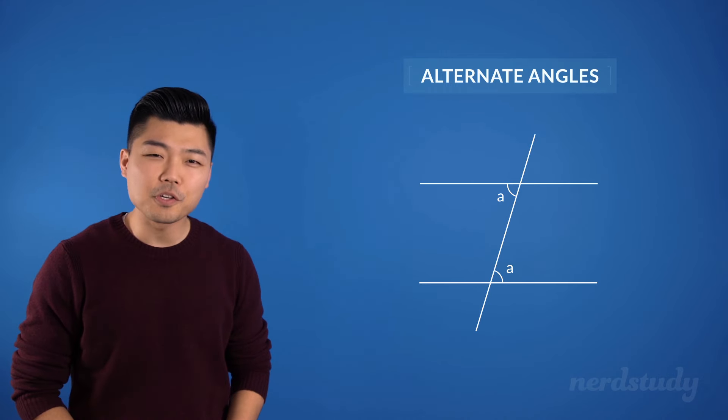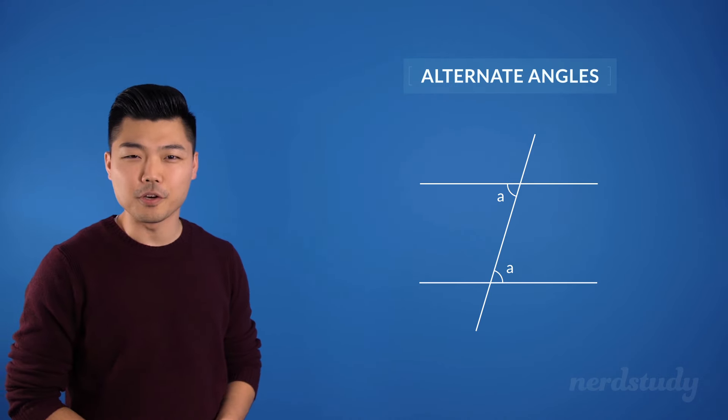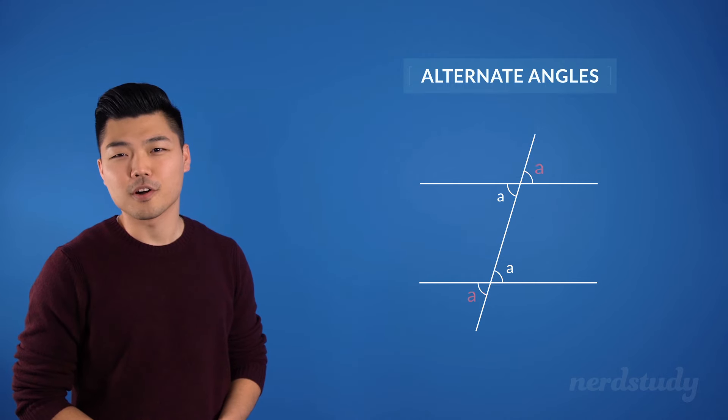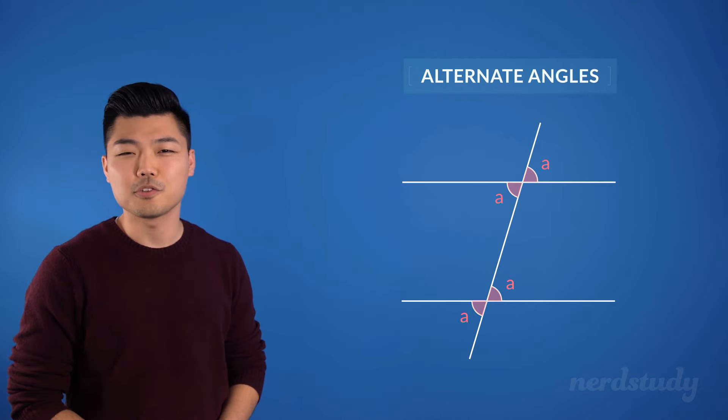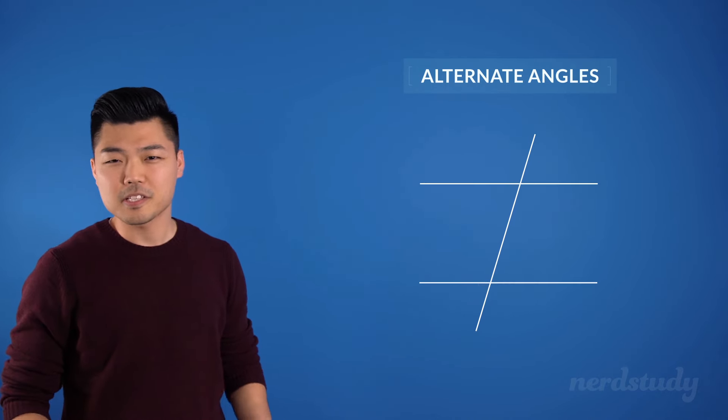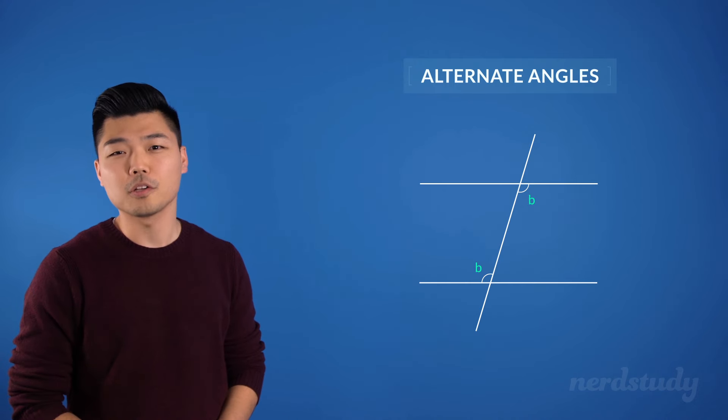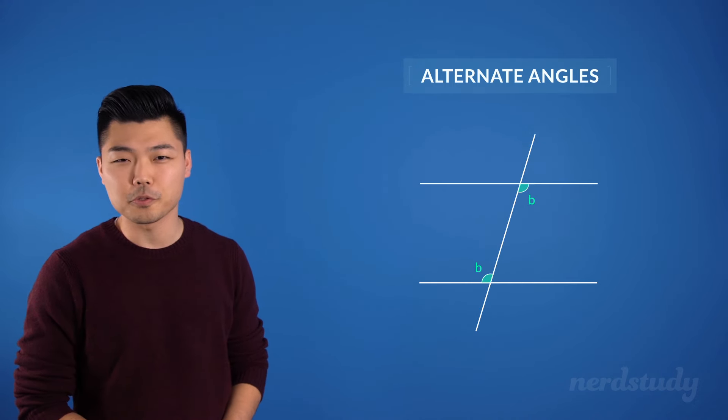Of course, we've also learned from our opposite angles video that opposite angles are equal. And this automatically means that all of these are actually equal to each other. And obviously, these two alternate angles are also equal to each other.